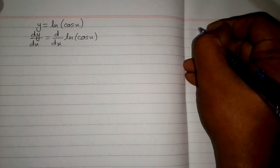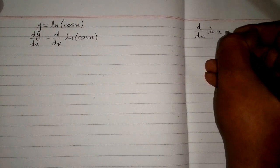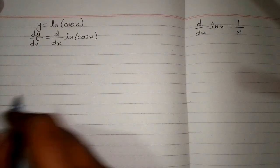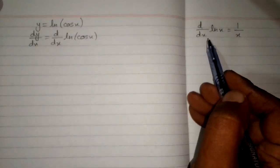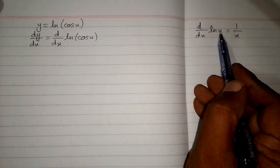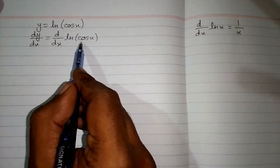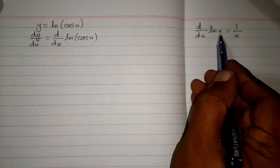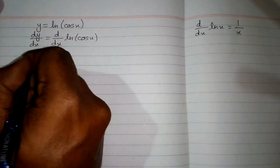Now we know that the derivative of ln of x is 1 upon x. So we can apply this formula but we can see that we have cosine of x in place of this x. So we cannot apply this formula directly, so we will use the chain rule of differentiation.